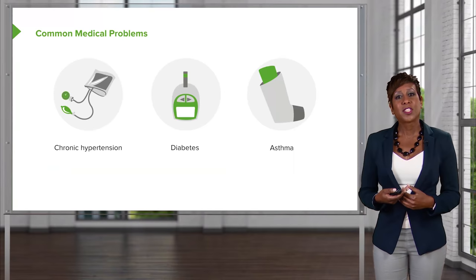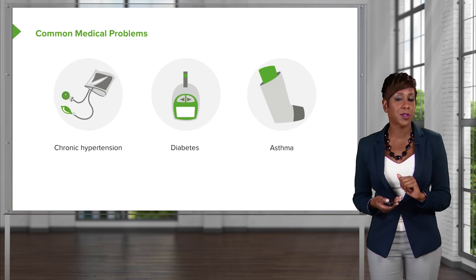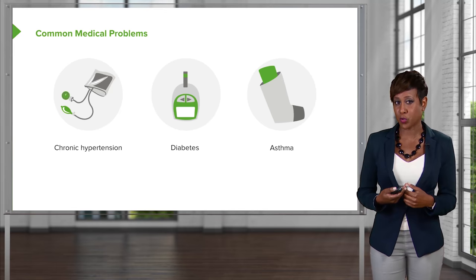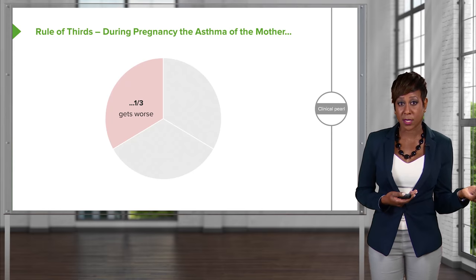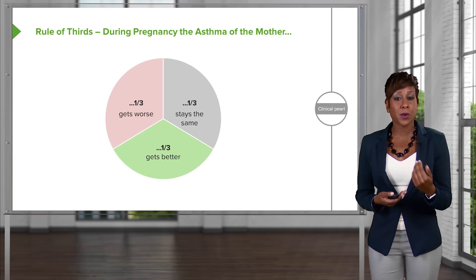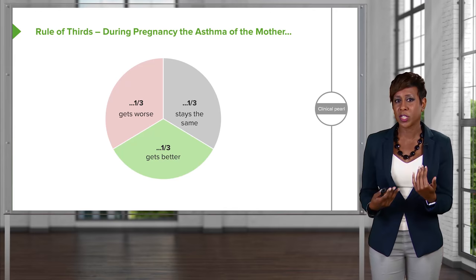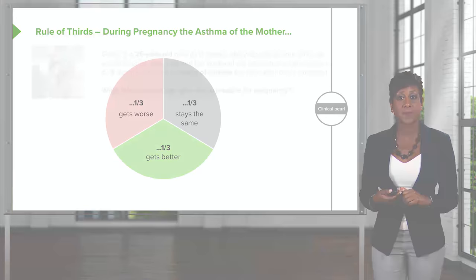Thinking back to our case, our patient was 25 years old with a history of asthma and had never been intubated — which tells us her asthma has been pretty well controlled. However, asthma is a tricky disease in pregnancy. For a third of women, their asthma gets worse in pregnancy. For a third, it stays the same. And for a third, it gets better. We don't really know why this happens — it may have to do with the increased secretions throughout pregnancy. This is an important clinical pearl for women with asthma in pregnancy.